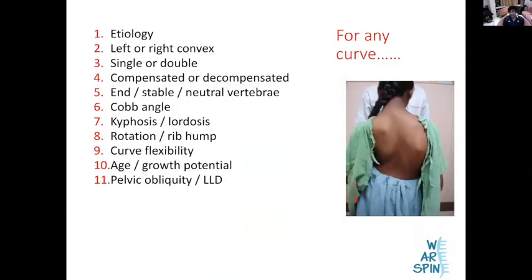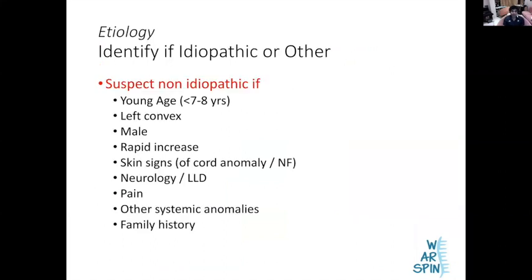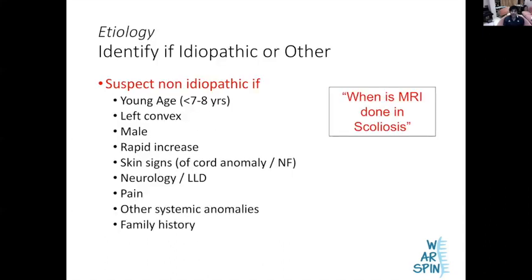Look for pelvic obliquity; make the child lie down and examine the hip. In your final diagnosis cover: cause of scoliosis, which side the main curve is convex to, single or double major, compensated or decompensated, likely end vertebrae, likely Cobb angle, kyphotic or lordotic, size of rib hump, rigid or flexible, age and growth potential of the child, pelvic obliquity, and why the child has come to you — their actual complaint. Red flags suggesting it is not idiopathic scoliosis include: younger child, left convex curve, male child, rapid progression, skin signs, neurology, pain, or family history — get an MRI in all these cases.